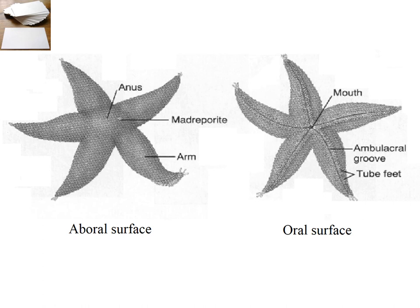Sea stars have a through gut, which means they have a separate mouth and anus. The mouth is on the bottom side — the oral surface — which is the side that faces the substrate. The aboral surface, the side you see when you swim up to them, is the top, and that's where the anus is, right in the middle, where waste can float away in the current.